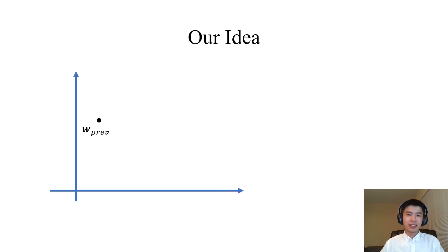Under such a threat model, how can an attacker perform its attack? Our idea is as follows. Assume we have a global model from the previous iteration, denoted W_previous. For simplicity, assume there are only two workers whose local models without attack are W1 and W2. We can aggregate W1 and W2 to get the new global model in the current iteration if there is no attack, denoted W_current.